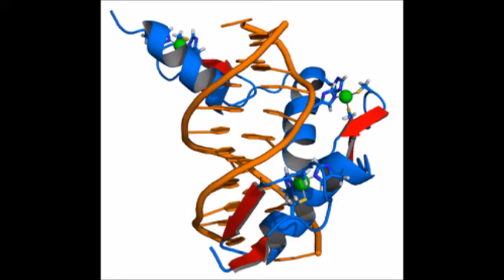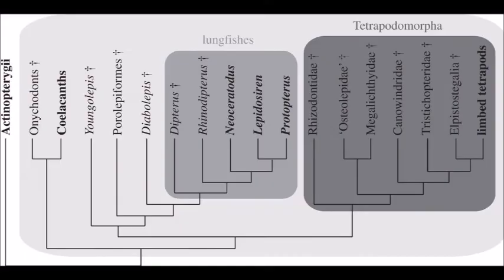And what of Krüppel-associated box domain containing zinc finger proteins, or KZFPs for short? Zinc finger proteins are a diverse group of proteins containing at least one zinc ion that often bind DNA, RNA, proteins, and other small molecules. On the other hand, KZFPs are proteins that often suppress transposons, and all tetrapods as well as lungfish and coelacanths have them. In other words, all living Sarcopterygians have KZFPs. Is this a fifth coincidence?